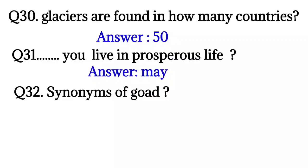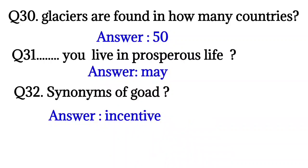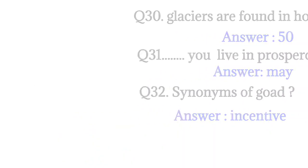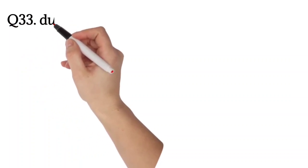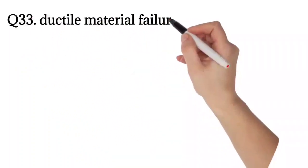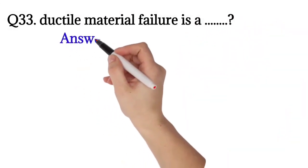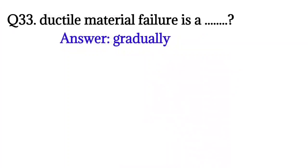Question number 32: Synonym of goad? The answer is incentive. So the synonym of goad is incentive. Question number 33: Ductile material failure is gradual. So the right answer is gradually.